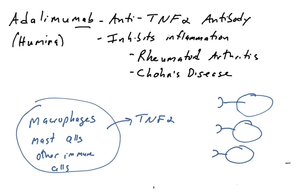So one way to inhibit TNF-alpha is to generate an antibody to it. This drug, Humira, is an anti-TNF antibody. It binds TNF-alpha and prevents it from binding to its receptors. If TNF-alpha can't bind the TNF-alpha receptor on the surface of target cells, then it will not induce inflammation. We will destroy the TNF-alpha via complement fixation or eat it up using antibody-mediated opsonization by macrophages, thereby destroying the TNF-alpha and reducing inflammation.